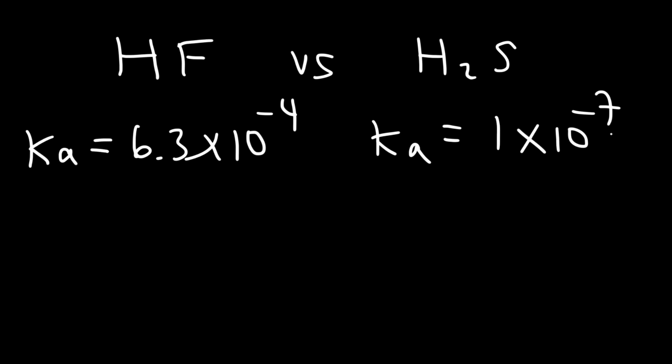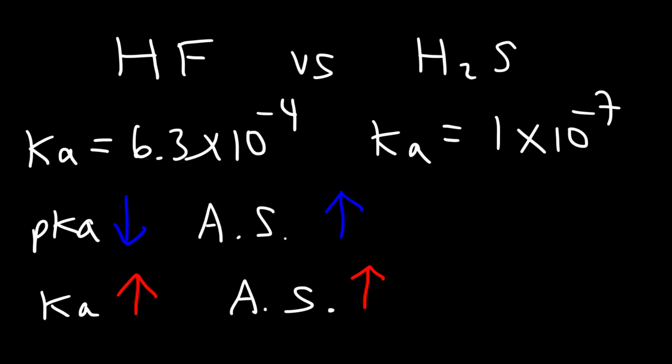Now we saw that there was an inverse relationship between the pKa and the acid strength. We said that as the pKa decreases in value, the acid strength increases in value. Now what about the relationship between Ka and acid strength? It turns out that there is a direct relationship. As the Ka value increases, the acid strength increases. Ka and pKa, they're inversely related. So the stronger acid is the one that has the higher Ka value.